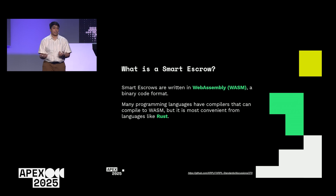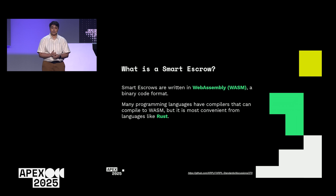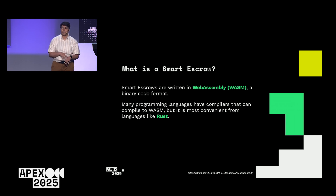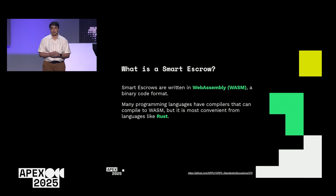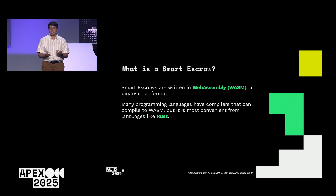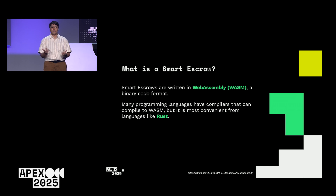The way you actually write these is with WebAssembly, or WASM, which is a binary code format. Many programming languages have compilers that let you write code and compile it down to WASM, but it's most convenient from languages like Rust, which has good tooling for WASM and is also decently human-readable.